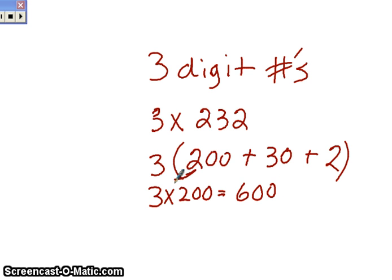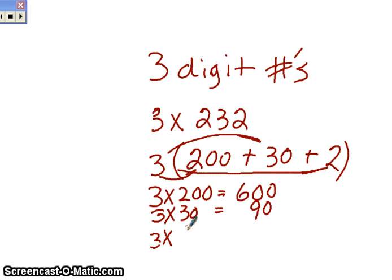So we get 3 times 200. We connect those two. And then we do the 3 times the 30. And that will give us, and you notice I'm lining these up nice and neat, these partial products based on place value, which is so important. And I'm going to want you to do that too. So we got 90. And then we have 3 times 2. And we have 6 lining up the equal signs nice and neat. And we add them up and we get 696.